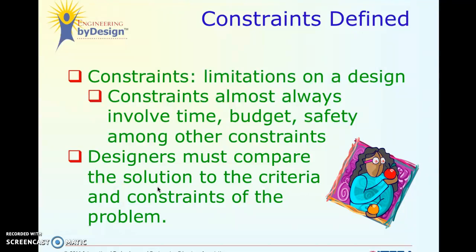So you're under a time constraint. A design that takes two weeks to build might be a wonderful design, but it's not a good design for the project because you're not following the constraints. Budget is a huge one in the real world — you have to make sure you have the money to pay for the project. Safety is another overall one. Going back to the marshmallow tower, your constraints were a limited number of spaghetti and a limited amount of tape and string — you couldn't go grab any random materials you wanted.